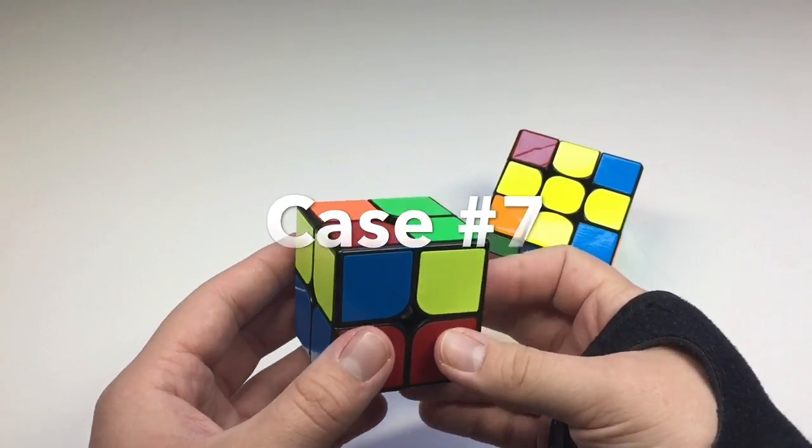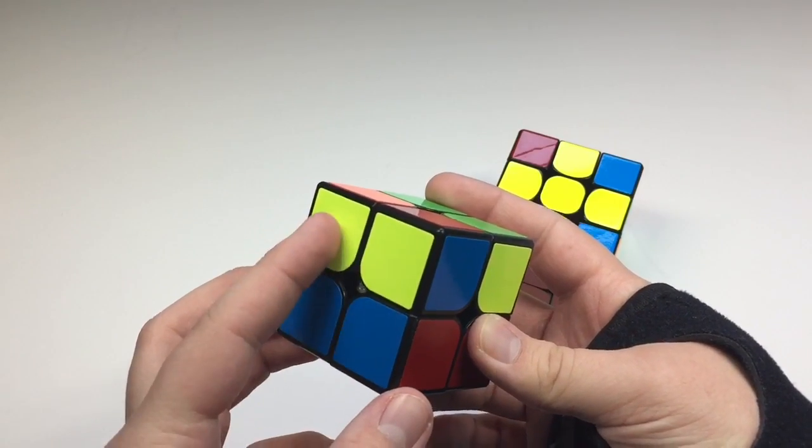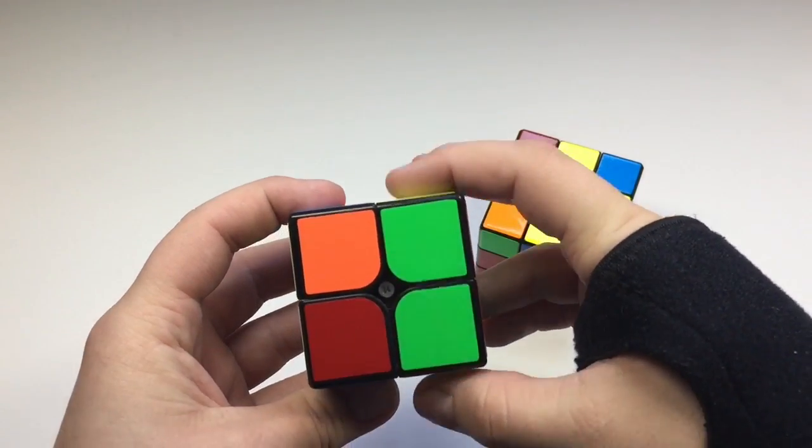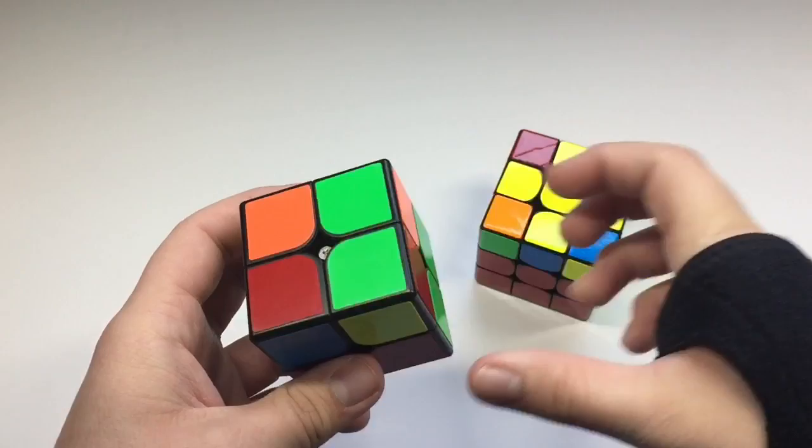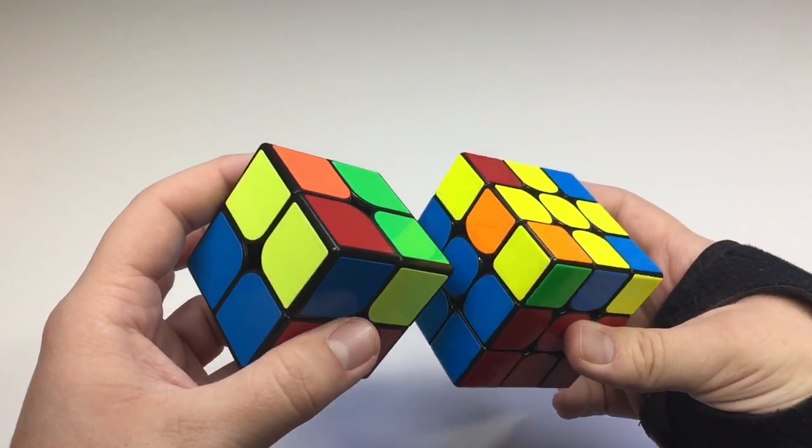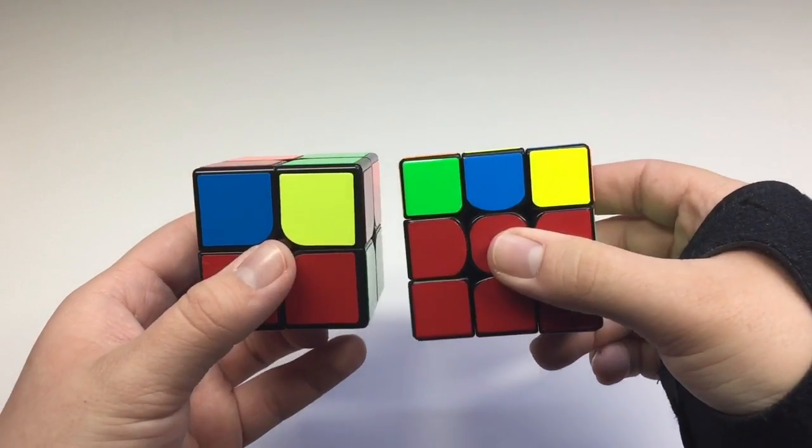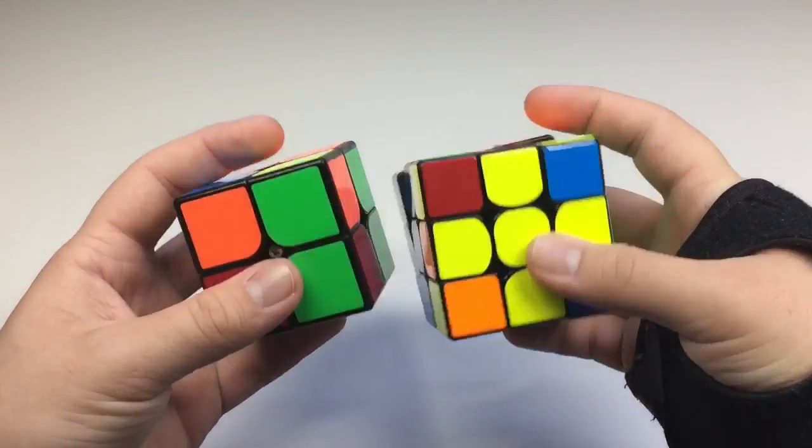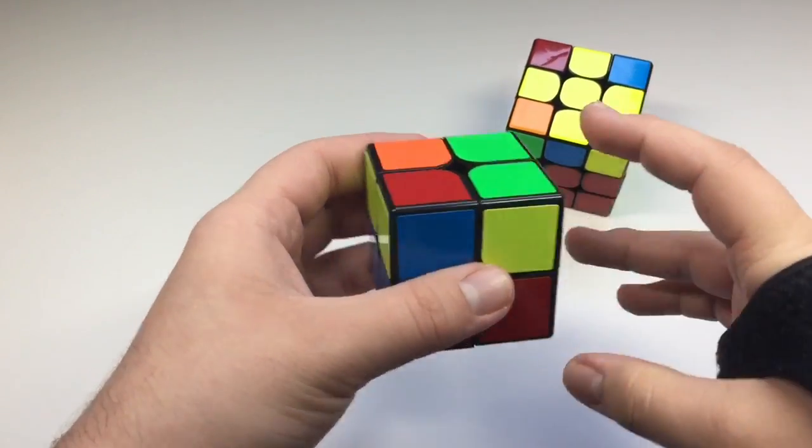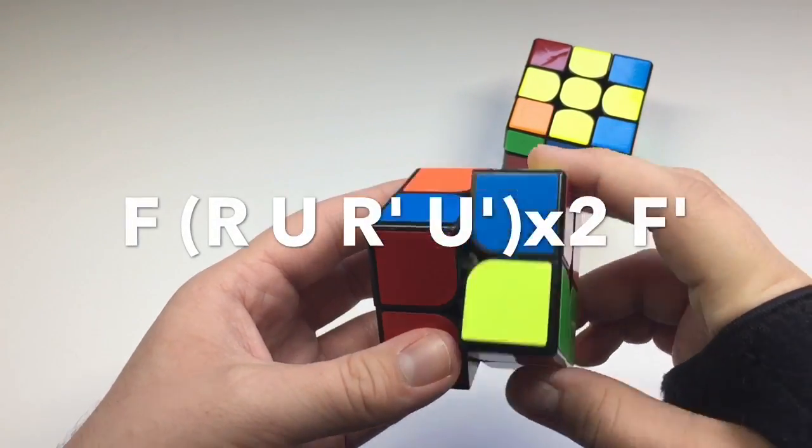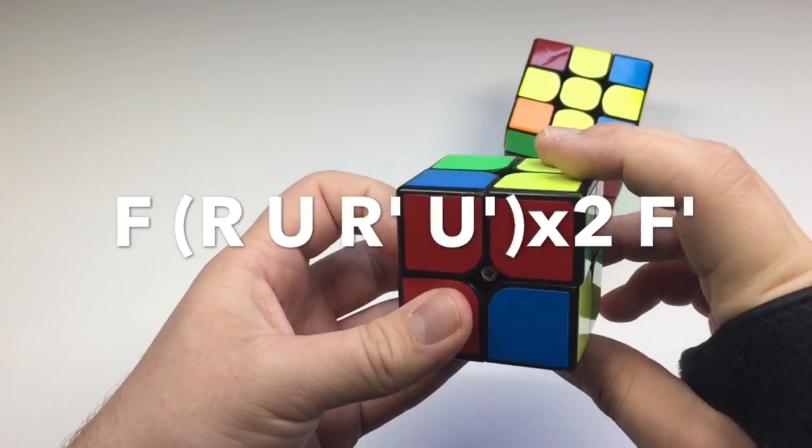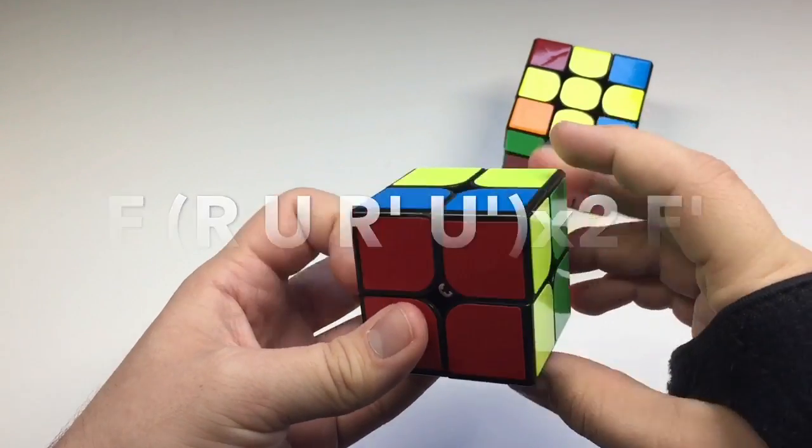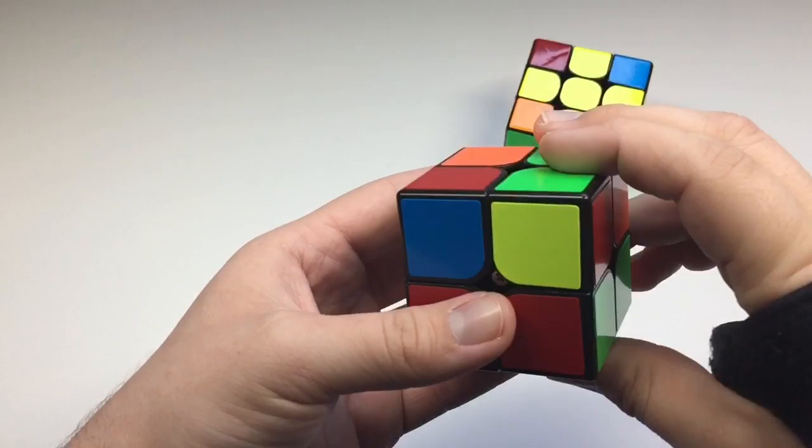Thank you all for this. So the next case looks like this. The two yellow right here and then two yellows right here. This is the OLL case it looks like. And the algorithm. And perform fast.